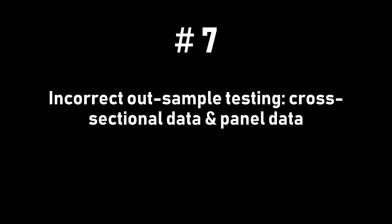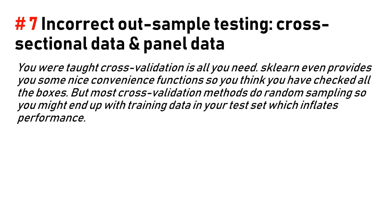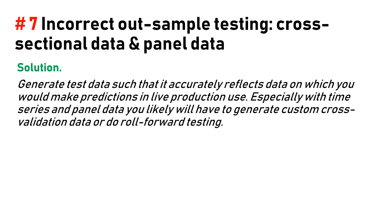Number seven: incorrect out-of-sample testing for cross-sectional and panel data. You were taught that cross-validation is all you need, and scikit-learn even provides convenient functions, so you think you've checked all the boxes. But most cross-validation methods do random sampling, so you might end up with training data in your test set, which inflates performance.